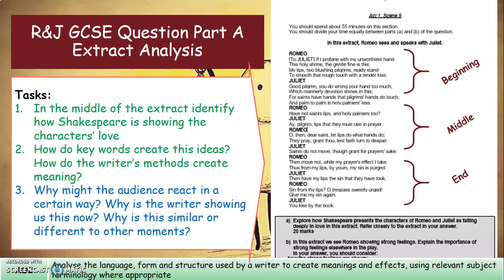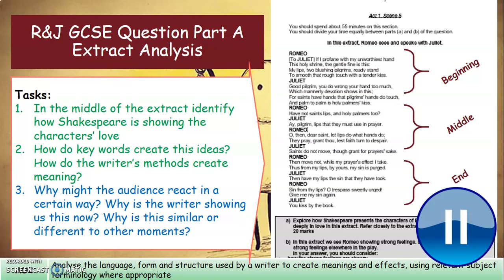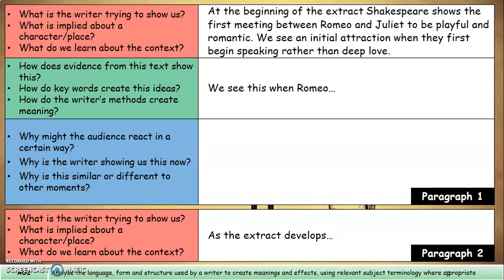Now it's your turn to look at the middle and the end — pause the video and analyze those two sections. Then have a go at your what/how/why paragraphs. I've started you off: 'At the beginning of the extract, Shakespeare shows the first meeting between Romeo and Juliet to be playful and romantic. We see an initial attraction when they first begin speaking, rather than deep love.' This will allow you to make evaluative comments showing love deepens throughout the extract. Complete that paragraph using your how and why analysis, then attempt your next paragraph independently. Pause and complete this task.